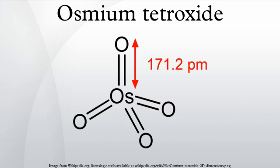Buckminsterfullerene adduct: OsO4 allowed for confirmation of the soccer ball model of buckminsterfullerene, a 60-atom carbon allotrope. The adduct, formed from a derivative of OsO4, was C60·OsO4·(4-tert-butylpyridine)2. The adduct broke the fullerene symmetry, allowing for crystallization and confirmation of the structure of C60 by X-ray crystallography.